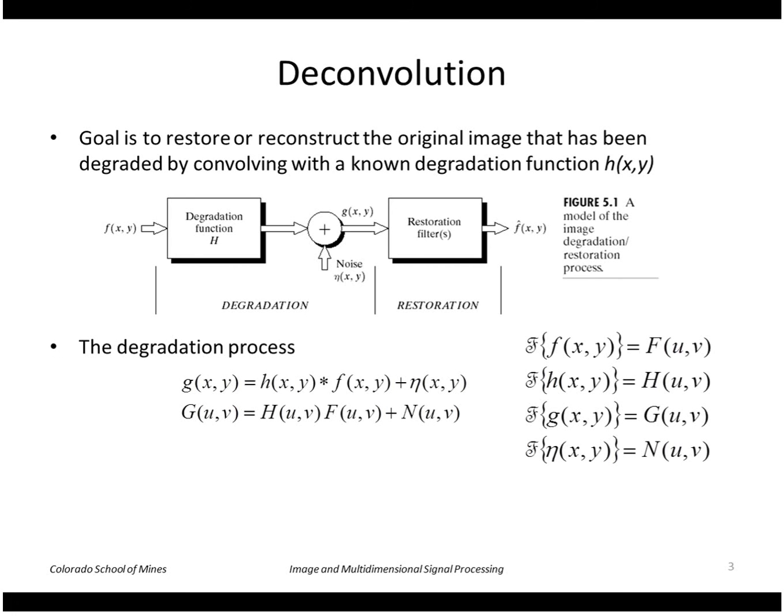Mathematically, the degradation process is a convolution as shown here plus noise. In the Fourier domain where you take the Fourier transform of f, h, g, and so forth, the convolution becomes a multiplication in the Fourier domain and then an addition. So we want to deconvolve the degraded function to try to undo the effects of the convolution.